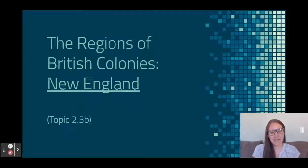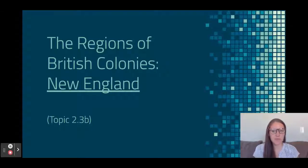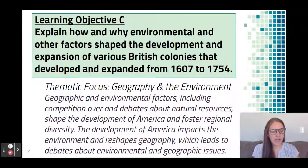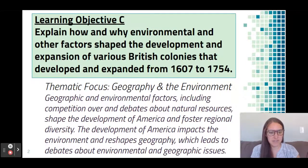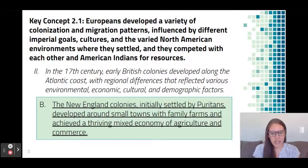Hello, welcome back. Today we're going to be talking about APUSH Topic 2.3, specifically looking at the New England Colonies. This topic has been broken up into four separate sections: Chesapeake, New England, Middle Colonies, and Southern Colonies. It's all centered around learning objective C — explain how and why environmental and other factors shape the development and expansion of various British colonies from 1607 to 1754.